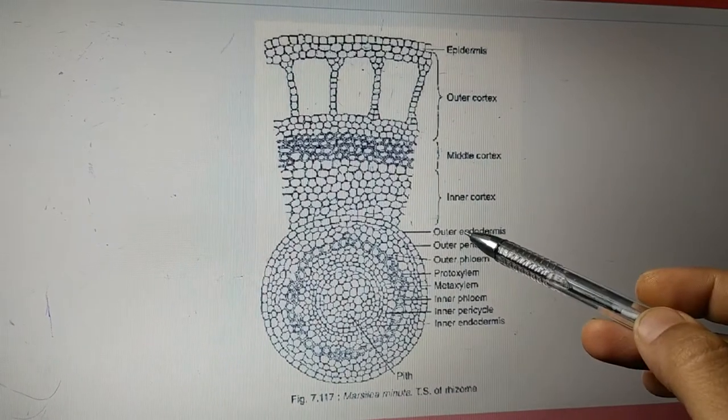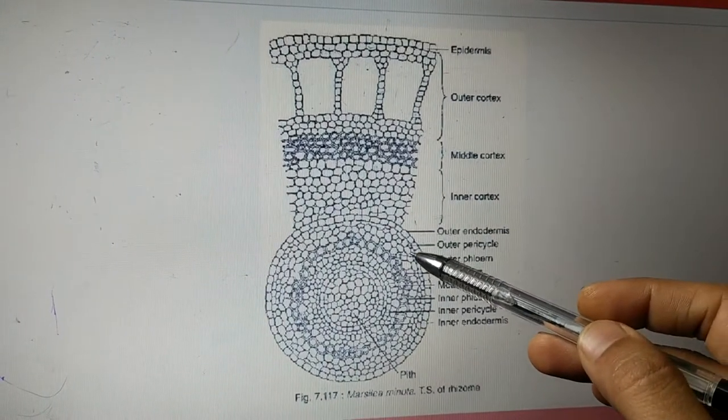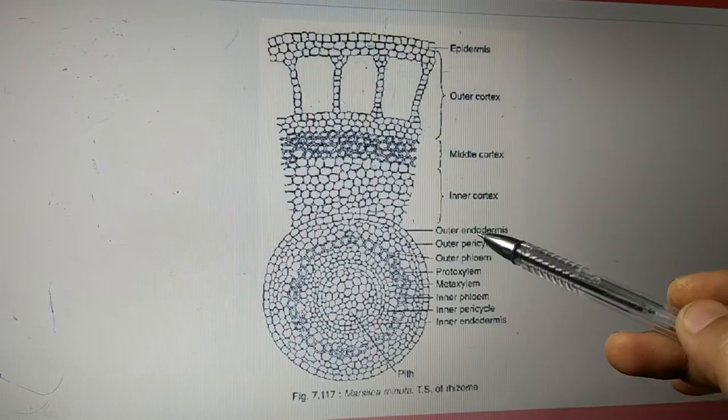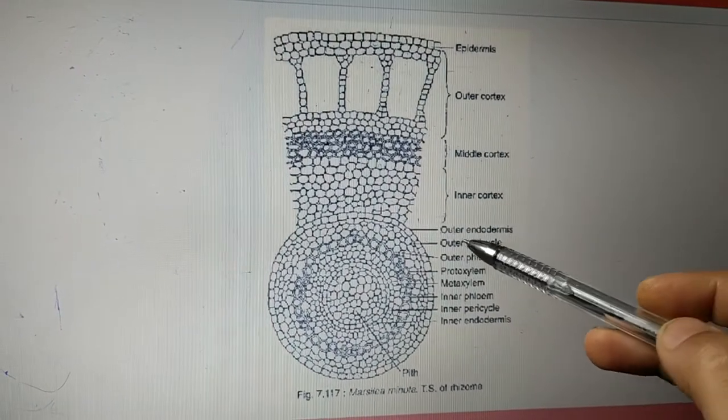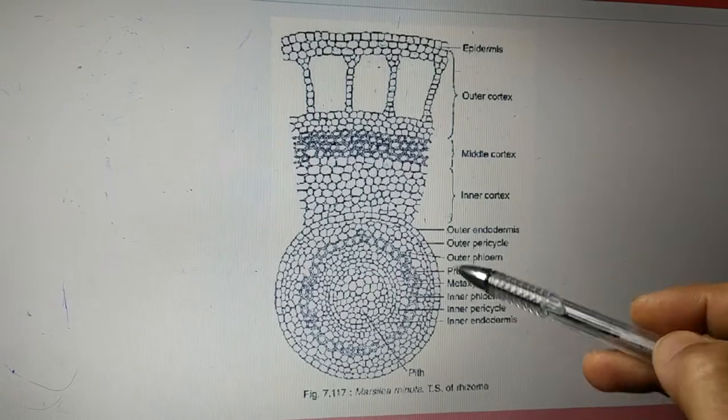We have the outer endodermis. Outer endodermis is followed by the pericycle. We have two endodermis, two pericycle, two phloem here. That's the reason the naming will be outer, inner likewise.